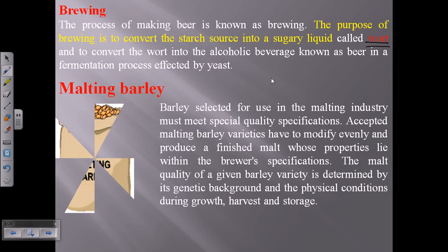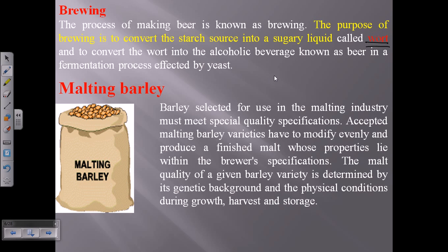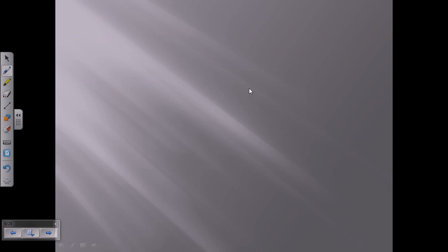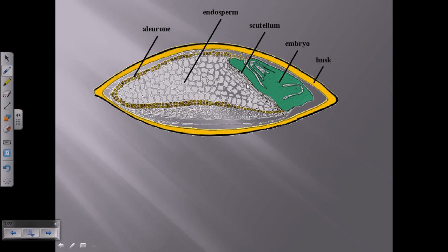The first important step is the malting of the barley. The barley is selected for use in the malting industry and must meet special quality specifications. The accepted malting barley varieties have to be modified to get better quality beer from time to time.